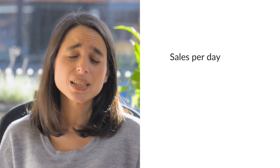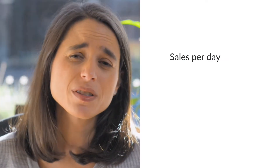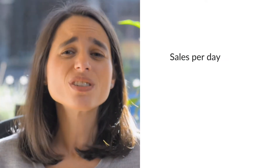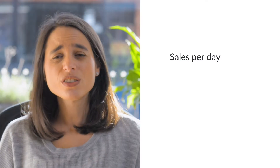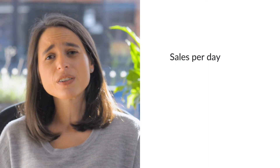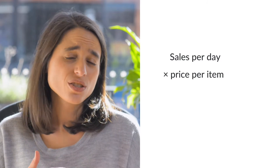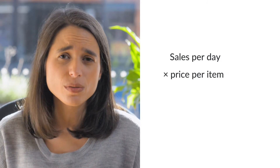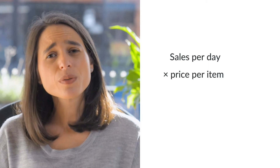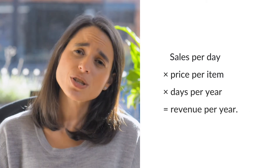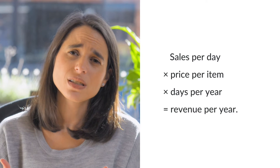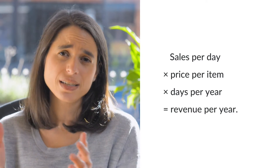First you've got to figure out what you're selling. Once you know that, you've got to figure out how much of it you can sell over a particular time period. If you're selling muffins, think about how many muffins you can sell in a day. Once you know those things you can figure out how much you charge — maybe $3, $4, or $5 a muffin. When you multiply those things together you get the revenue for that time period.